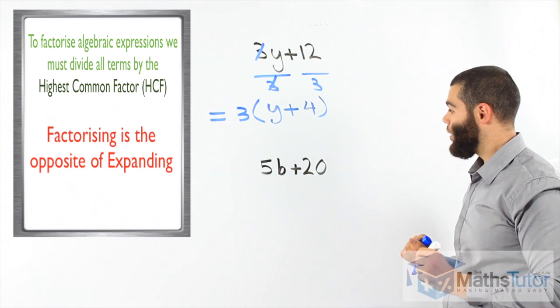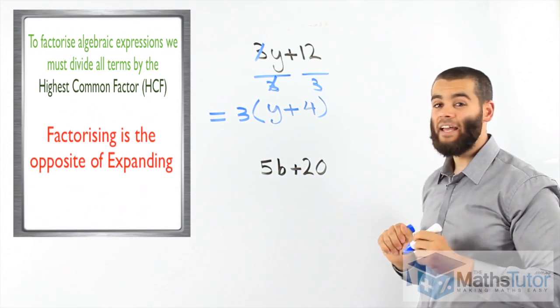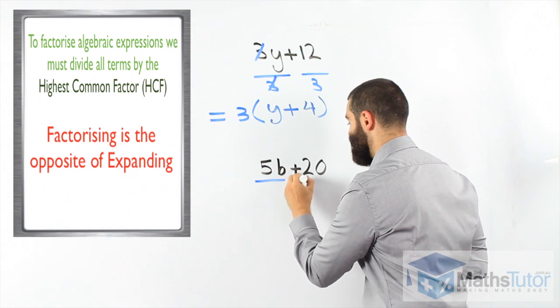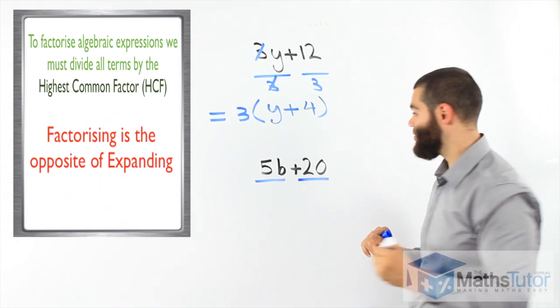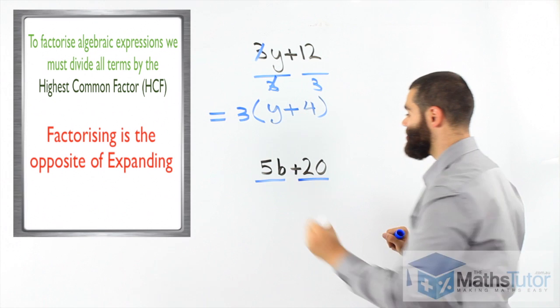Let's do this one, we're asked to factorise, 5b plus 20, again, what do we look for? The highest common factor. The highest common factor and we divide both terms by the highest common factor. In here, if you know your times tables, you know straight away, it's going to be 5.